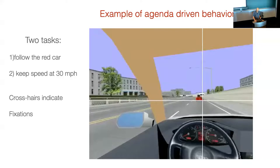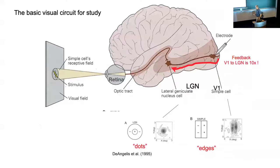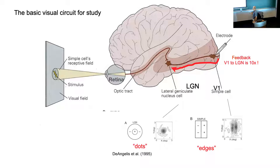For vision, when light hits the retina, the LGN in the thalamus is like an I/O port — a waystation. Then we go into cortex, and the first part is V1. There's feedback from V1 back to the thalamus, and I like to think about that bus as being ten times larger than the feedforward bus. In my mind, that feedback bus is where you put your question.